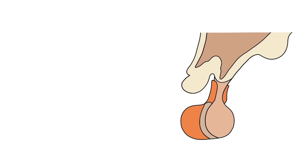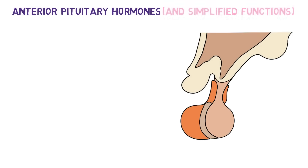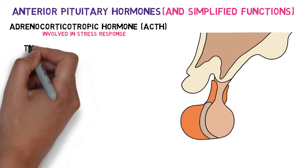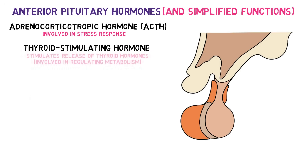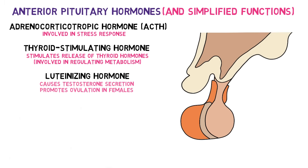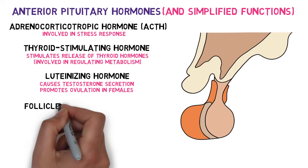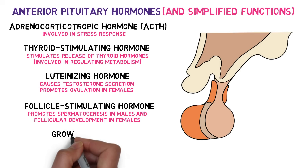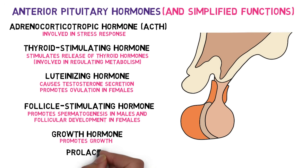The anterior pituitary contains cells that produce several important hormones: adrenocorticotropic hormone, thyroid-stimulating hormone, luteinizing hormone, follicle-stimulating hormone, growth hormone, and prolactin. These hormones are produced in the anterior pituitary, but their secretion into the bloodstream is controlled by signaling hormones made and secreted by the hypothalamus.